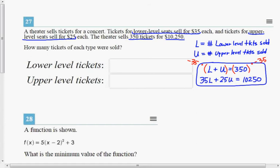That top equation now becomes negative 35L minus 35U equals 350 times negative 35, which is negative 12,250. The other equation I'm going to write underneath.